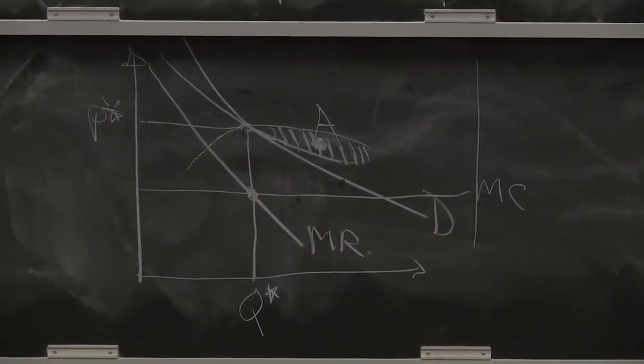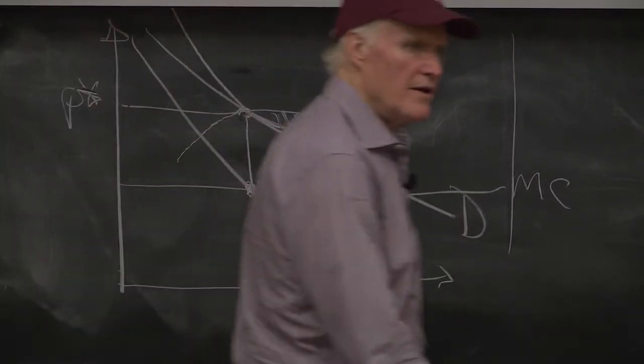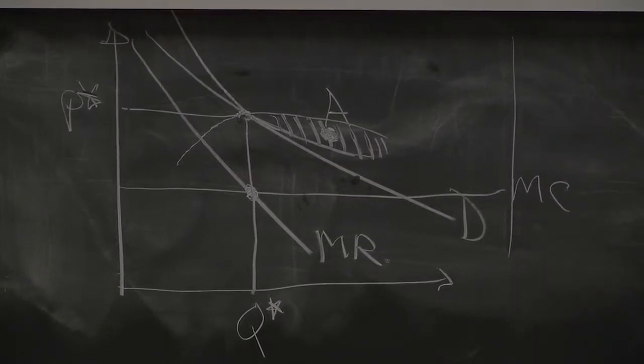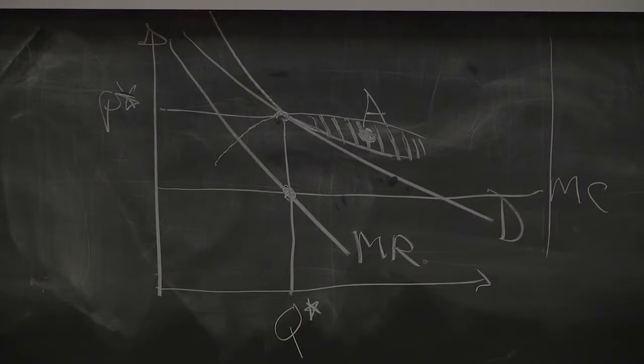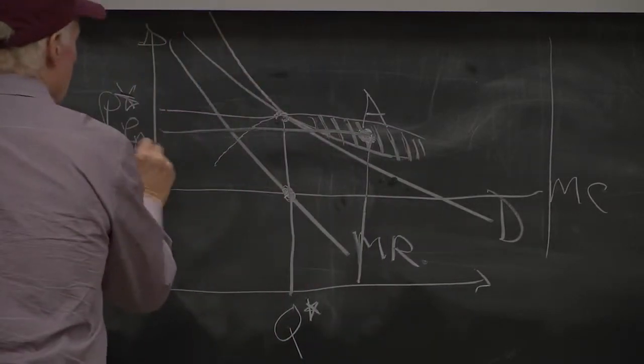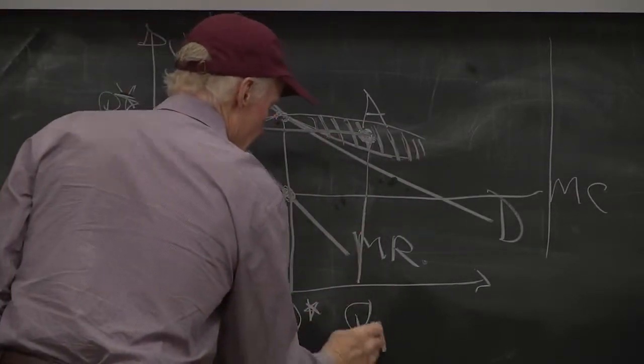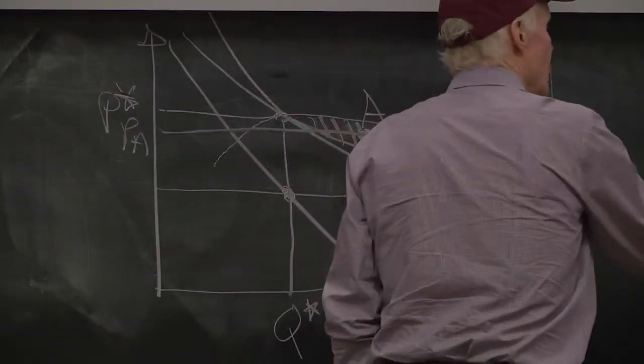Now how would you characterize a point like point A? What are the important properties of point A relative to P star, Q star? Describe for me the key features of point A. Point A, call this P-A and Q-A. What would you say is important? How would you say economically important about point A? There's several important points.